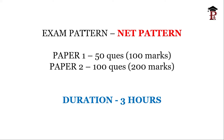The exam has Paper 1 and Paper 2. Paper 1 is a general paper covering attitude, research, teaching, and aptitude — 50 questions. Paper 2 is a discipline-specific paper which consists of 100 questions. In both papers, there is no negative marking.